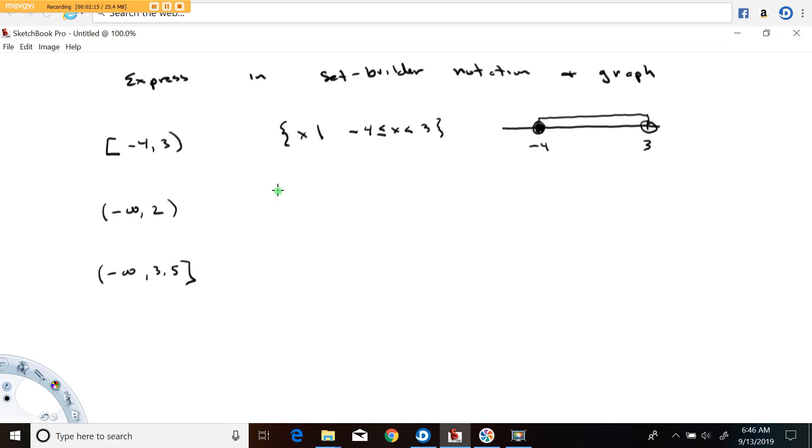So to express in the set builder notation, the set of all x such that x is less than 2. To graph it, here's 2 on a number line. Open circle because that's a soft bracket. Arrow to the left. Not the best arrow I've ever drawn. A little better.